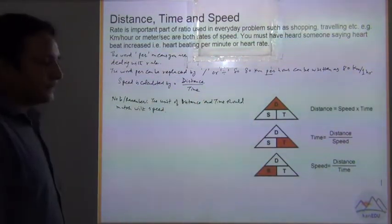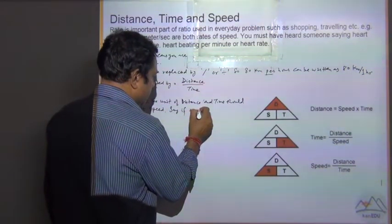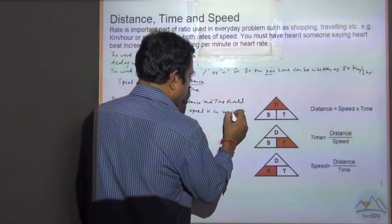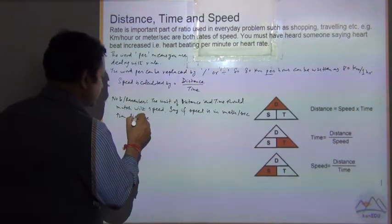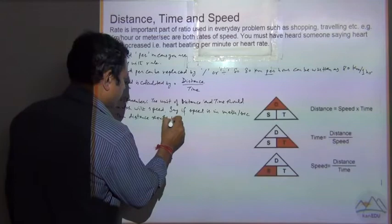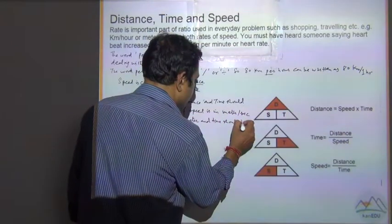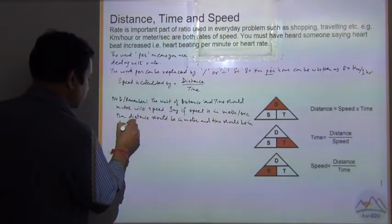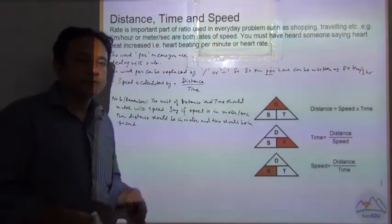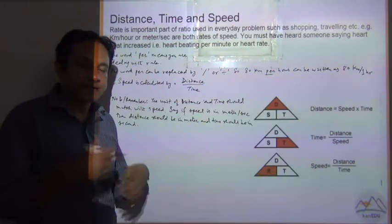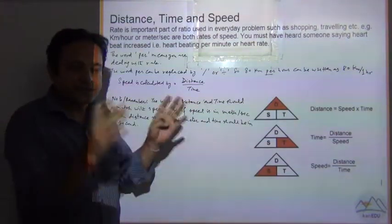So speed is say in meter per second. If speed is in meter per second, then distance should be in meters and time should be in seconds. So sometimes questions are tricked.